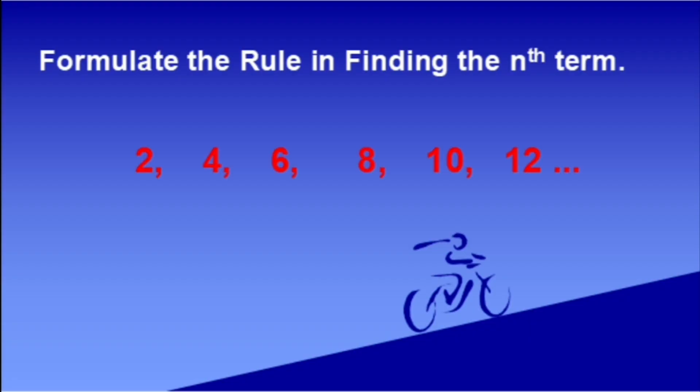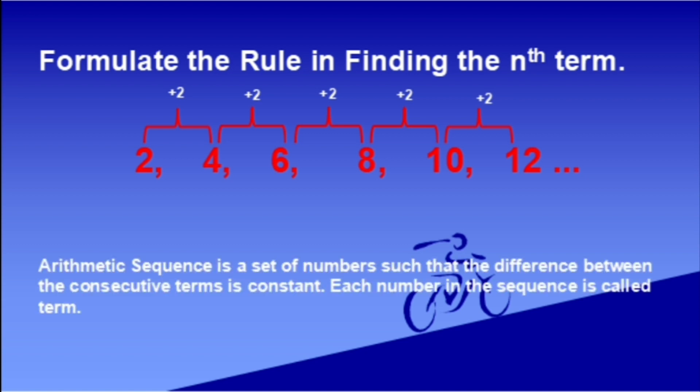Observe this number sequence. If you notice, there is a constant difference of two between the terms. This number sequence is an example of an arithmetic sequence. An arithmetic sequence is a set of numbers such that the difference between consecutive terms is constant.